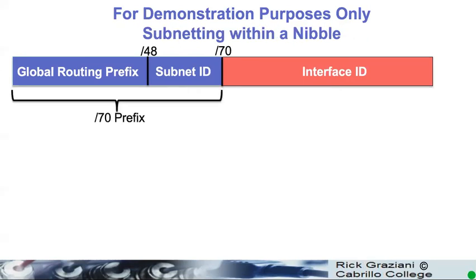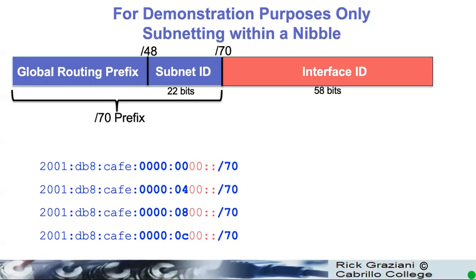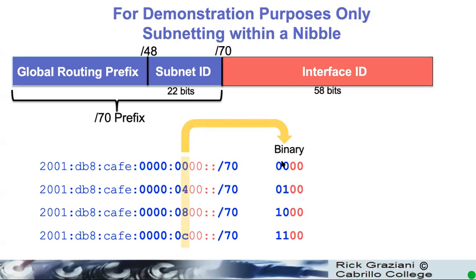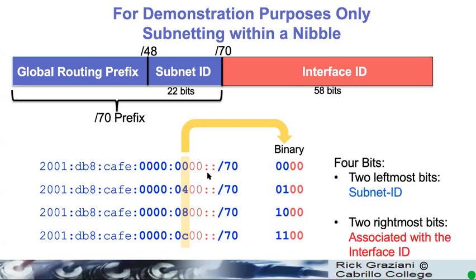But what happens if I want to subnet within a nibble? A slash 70. What that means is it gives us these kinds of subnets — looks a little strange. We're incrementing, but not by one; we're incrementing by four in this case. A slash 70 means the left two bits are for the subnet ID, and the right two bits remain zero for the prefix — that's going to be part of the interface ID. So, zero-zero gives us 0, incrementing that bit gives us 4, one-zero-zero-zero gives us 8, one-one-zero-zero gives us C. So, there's a pattern to it.